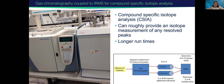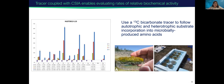Gas chromatography coupled to IRMS can be used for compound-specific isotope analysis. So instead of having one isotope value for a sample, this method can pull different compounds apart and you can get the isotope value for each different compound. A study that utilized this method used 13C bicarbonate as a tracer to follow autotrophic and heterotrophic substrate incorporation of microbe-produced amino acids. In the figure, you have a series of amino acids with delta 13C on the y-axis, looking at the labeled carbon over a two-day period. We see that different amino acids are turning over this carbon faster than others.